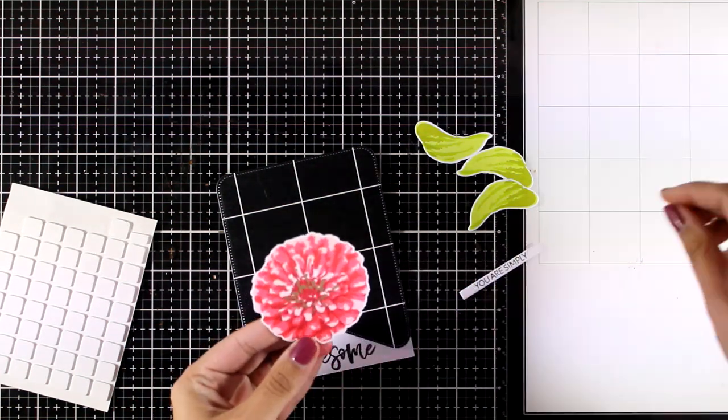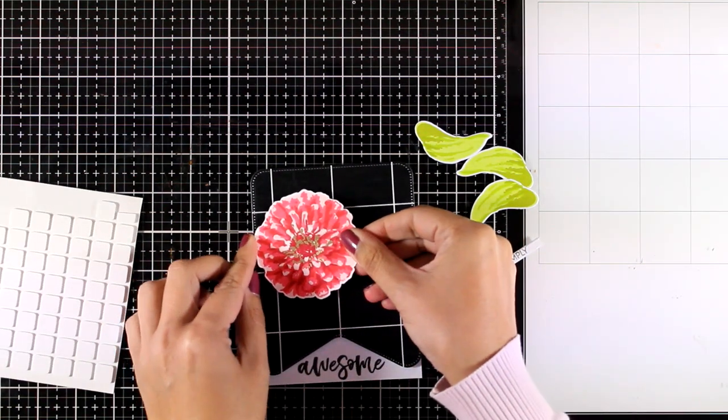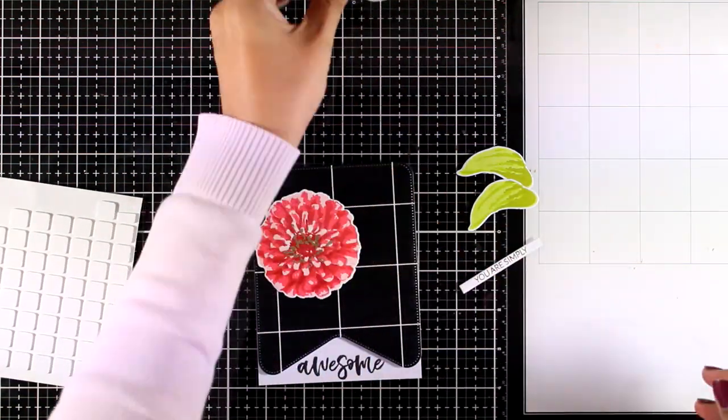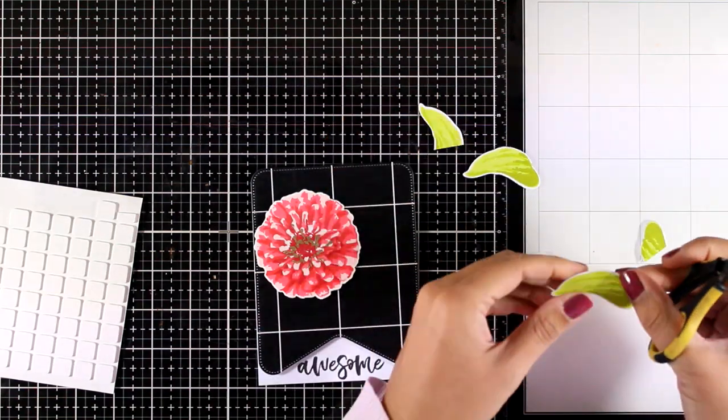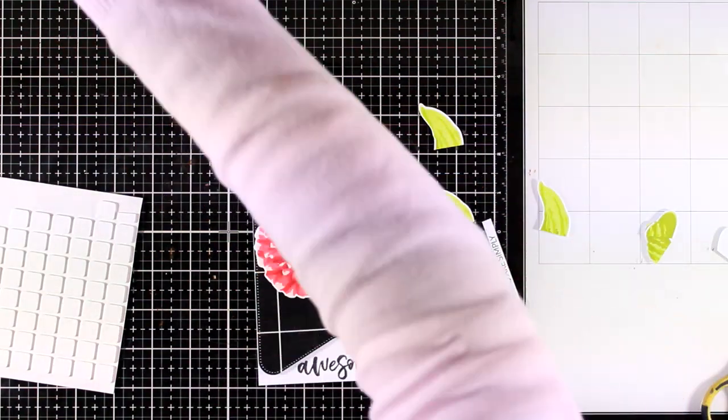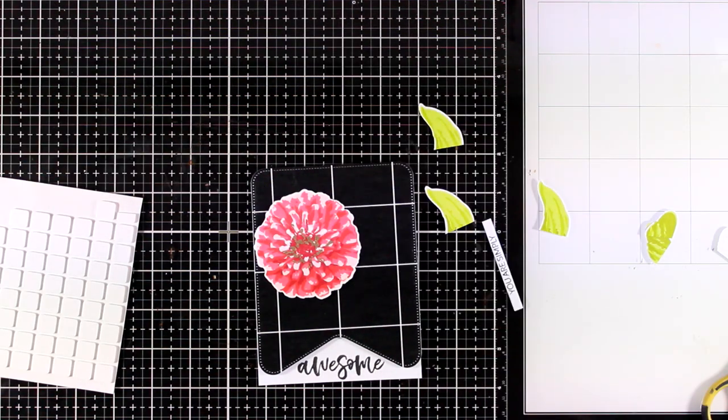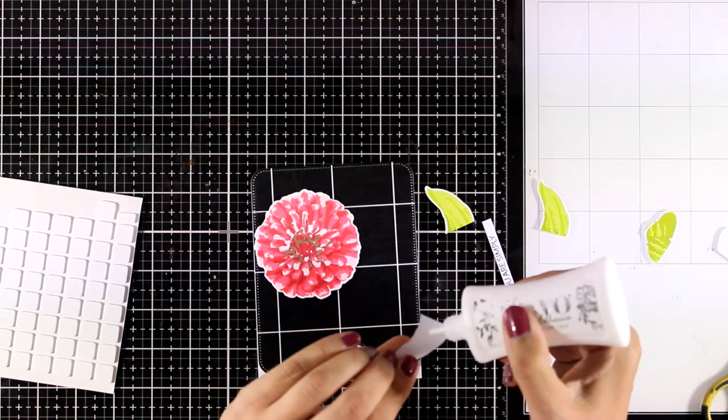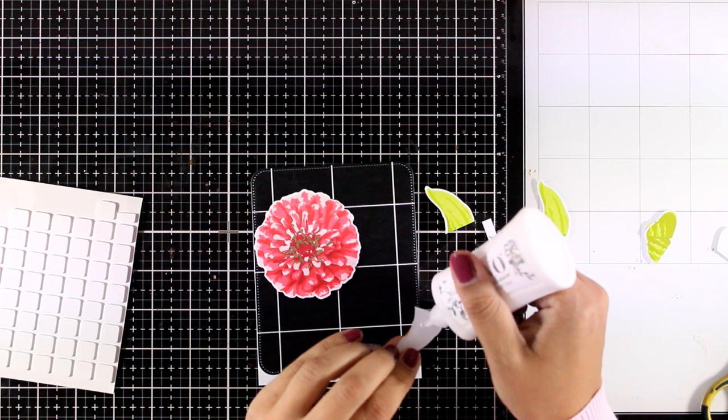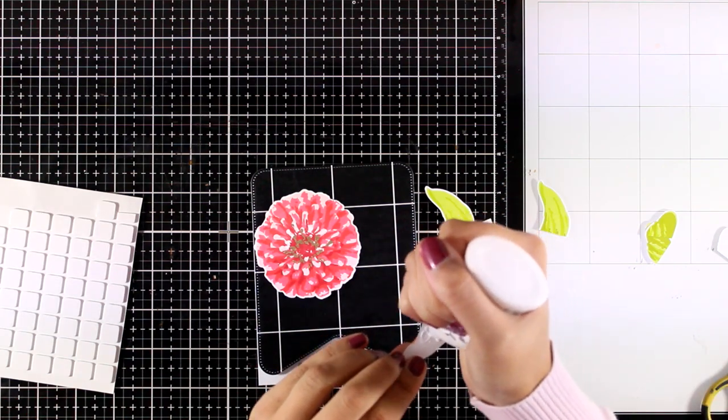I love the size of it because it's a great focal point and covers up a great deal of the card. For the leaves, I'm going to chop off a part of them since I need to tuck them underneath the flower. I'm using glue for the leaves, so these are going to lay flat on top of my banner while I will have dimension on the flower.